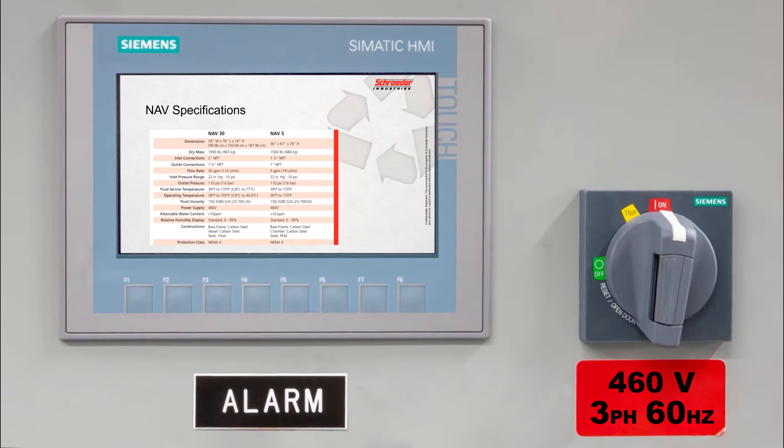Now as you see in the specs, there's not a whole lot of difference on the NAV 5 and NAV 30. Basically, it's a couple inches narrower, three inches narrower, about 10 inches less in length and height. But look at the weight, it's only about 400 pounds difference. It's still a big piece of equipment.